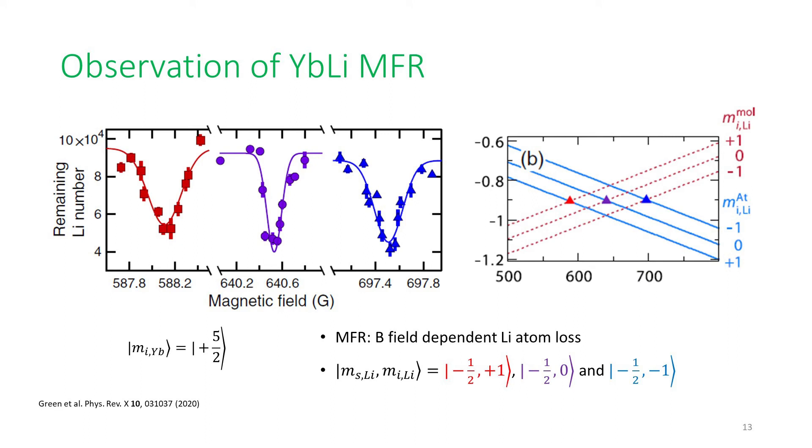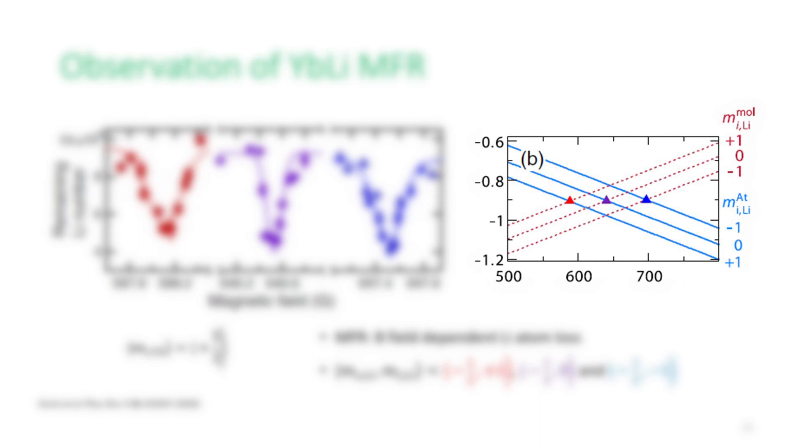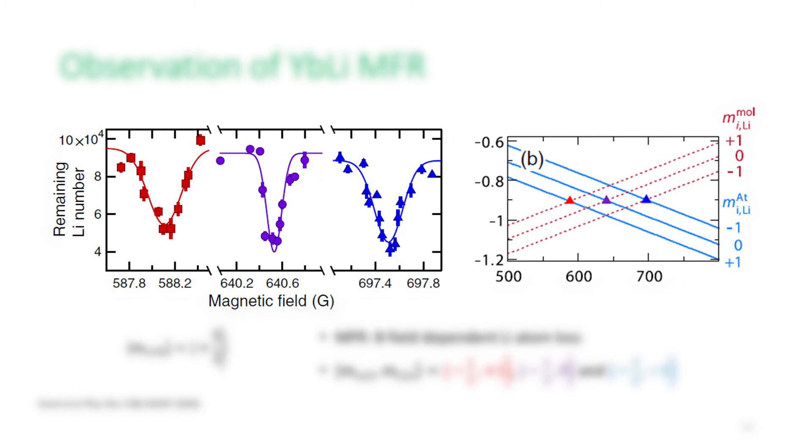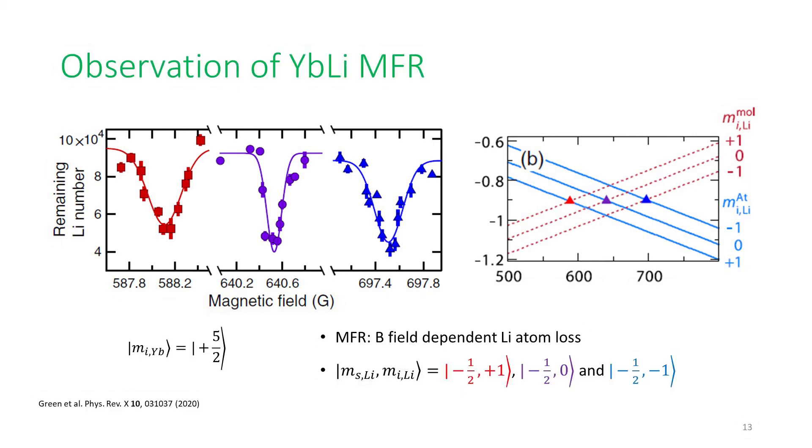Now let's move on to the experimental data. On this side is the data for the three resonances corresponding to the three spin states of lithium atoms. On the right is a recap of the calculated locations of these resonances from two slides ago, and on the left is the data we've taken. The red resonance has mi of lithium equal to plus one, the purple zero, and the blue minus one. These resonances occur at different magnetic fields and are measured by the remaining lithium number after the interaction.